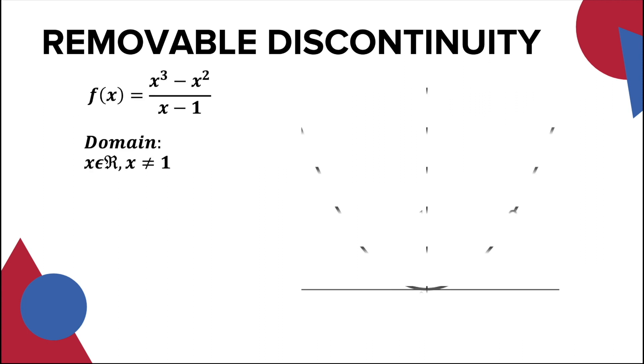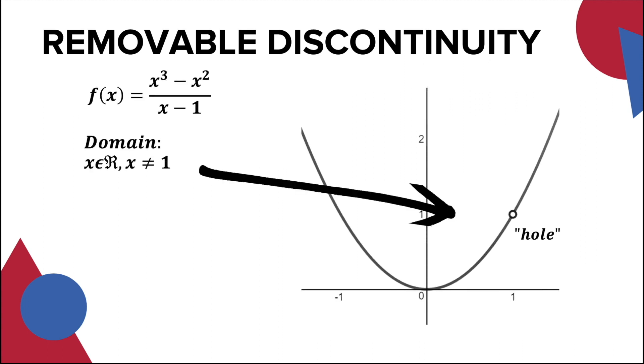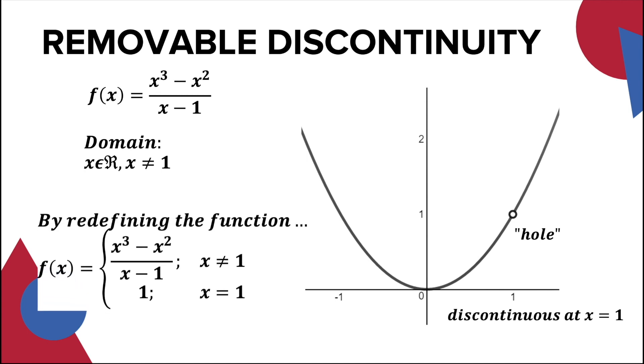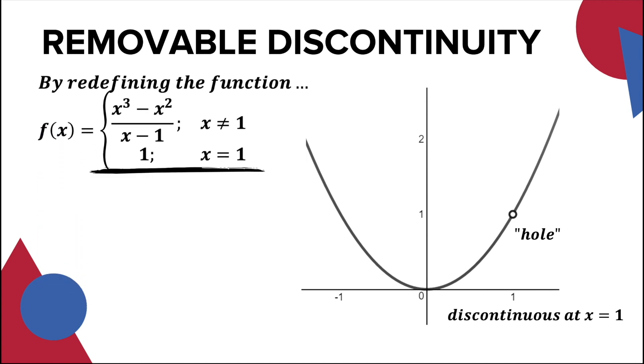For this example, the hole occurs when 1 is directly substituted to the function since it results to 0/0 or indeterminate form. Since the limit of the function still exists as x approaches 1, the hole can be removed by redefining the function at x = 1, which makes the function continuous at x = 1.